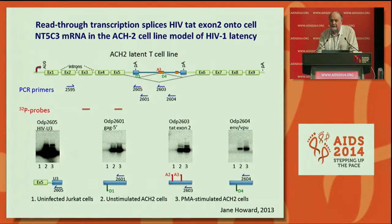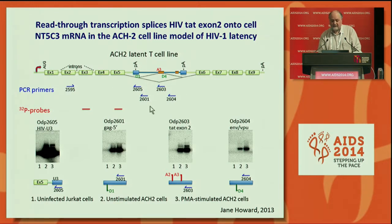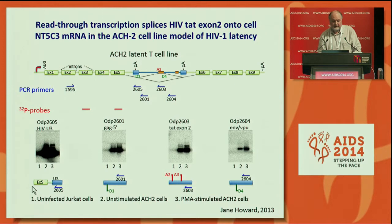We've gone on to look at models of latency. This is the ACH2 cell line, and we know where the integration site is in this cell line, so we can target it specifically using primers to cellular exons and then regions within HIV to look for presence of these chimeric messages. We clearly find read-through transcription from the cellular exon into the LTR and even further into GAG, but we also find evidence of splicing taking place between the cellular exons and the TAT region.